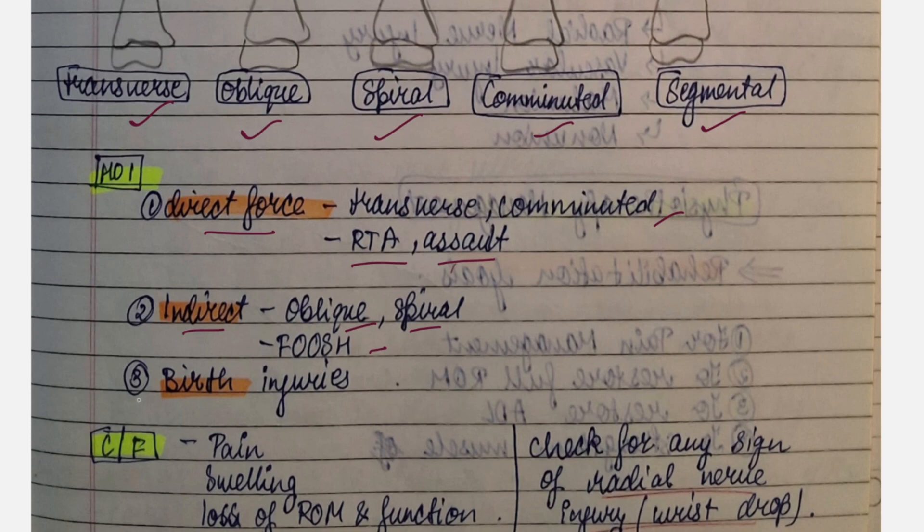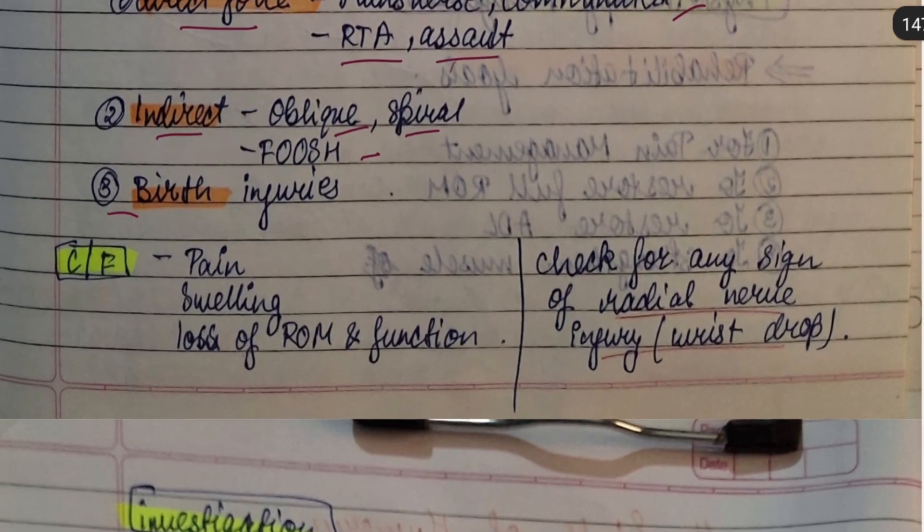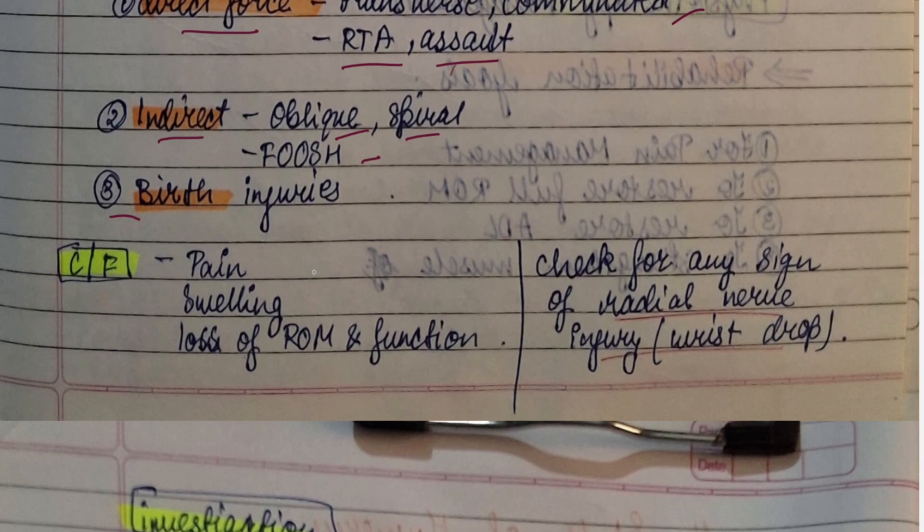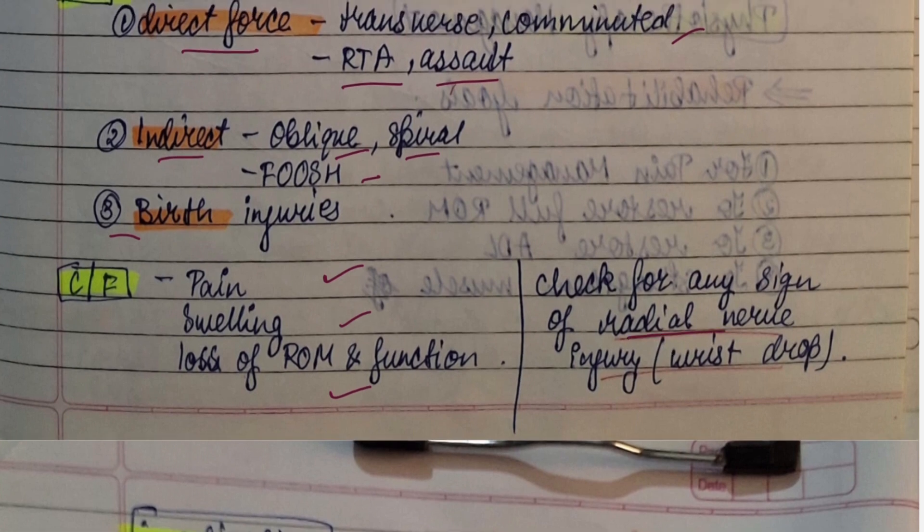Now coming to the clinical features: pain, swelling, loss of range of motion and function. Then you have to also check for any sign of radial nerve injury, that is wrist drop.